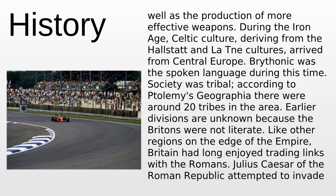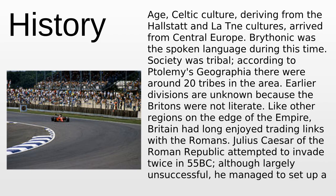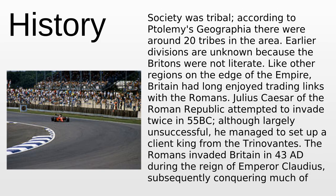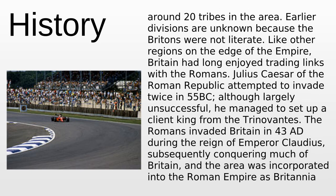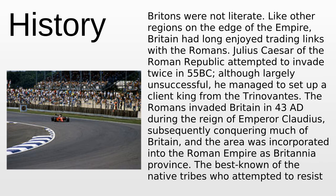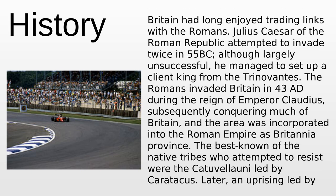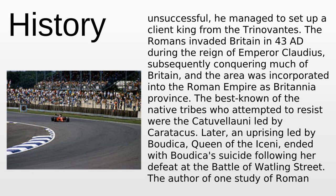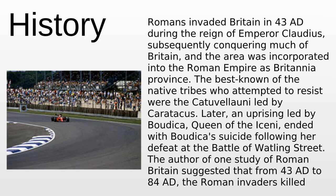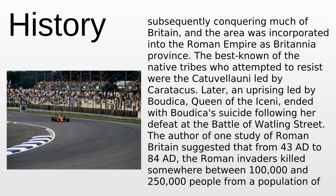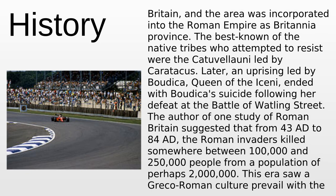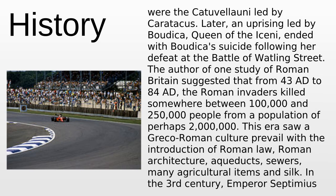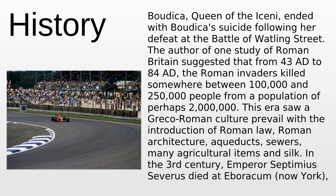During the Iron Age, Celtic culture from the Hallstatt and La Tène cultures arrived from Central Europe. Brythonic was the spoken language and society was tribal, with around 20 tribes according to Ptolemy's Geographia. Julius Caesar attempted to invade twice in 55 BC, managing to set up a client king from the Trinovantes. The Romans invaded Britain in 43 AD under Emperor Claudius, incorporating the area into the Roman Empire as Britannia province. Native tribes resisted, including the Catuvellauni led by Caratacus, and later Boudicca, Queen of the Iceni, whose uprising ended with her defeat at the Battle of Watling Street.